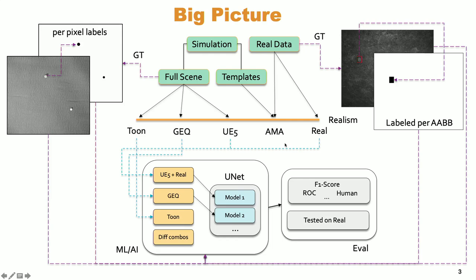For the experiments, the big picture is that we would train a model with a combination of data — for example, UE5 data and real data put into a dataset through the model, or just game engine quality through the model, or cartoon data through the model, and then different combinations of that. We scored those with a ROC curve and also just looking at it visually to see how good it looked.